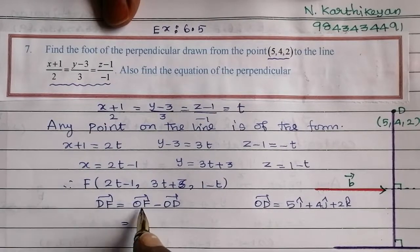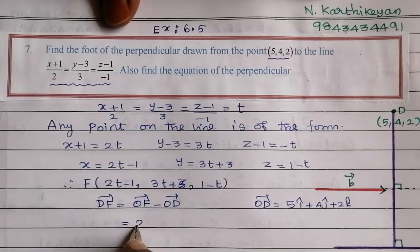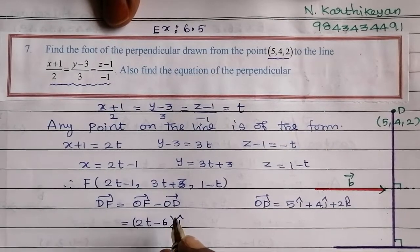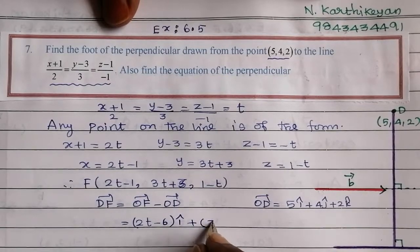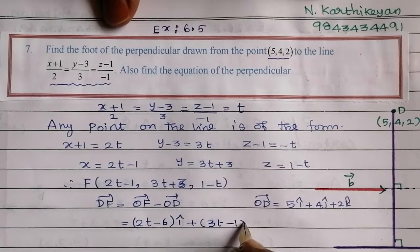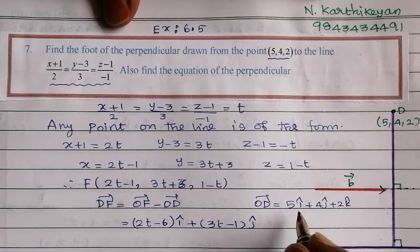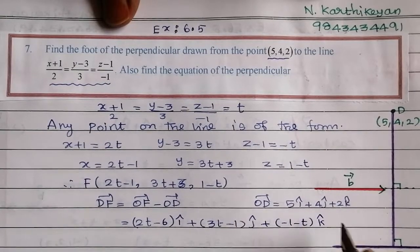So DF = OF minus OD gives: (2t−1−5)i + (3t+3−4)j + (1−t−2)k, which simplifies to (2t−6)i + (3t−1)j + (−1−t)k.